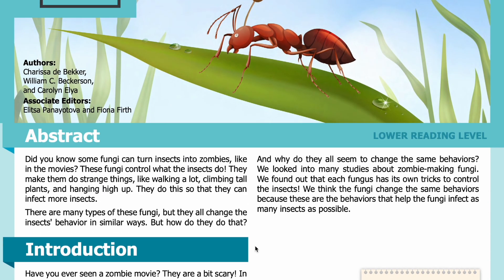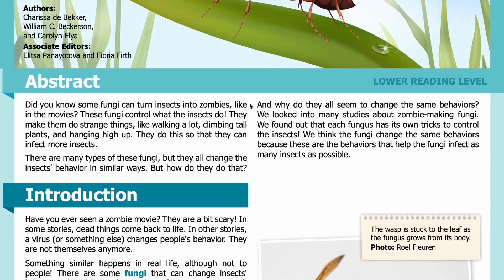Did you know some fungi can turn insects into zombies, like in the movies? These fungi control what the insects do — they make them do strange things like walking a lot, climbing tall plants, and hanging high up. They do this so that they can infect more insects. There are many types of these fungi, but they all change the insect's behavior in similar ways. But how do they do that, and why do they all seem to change the same behaviors?